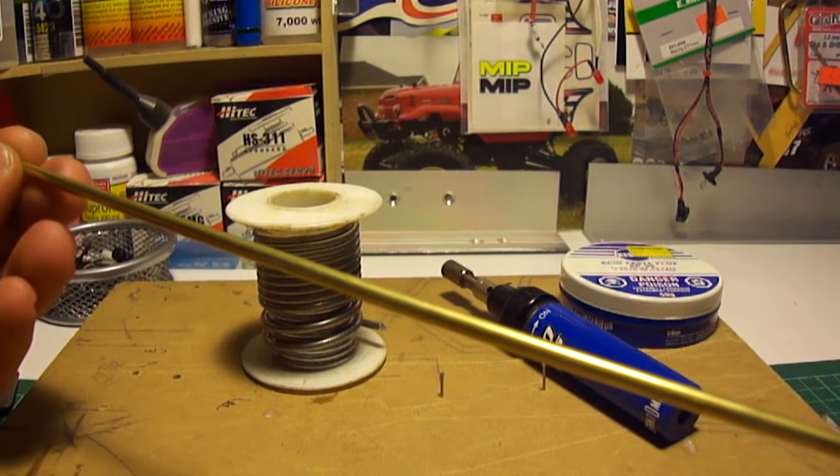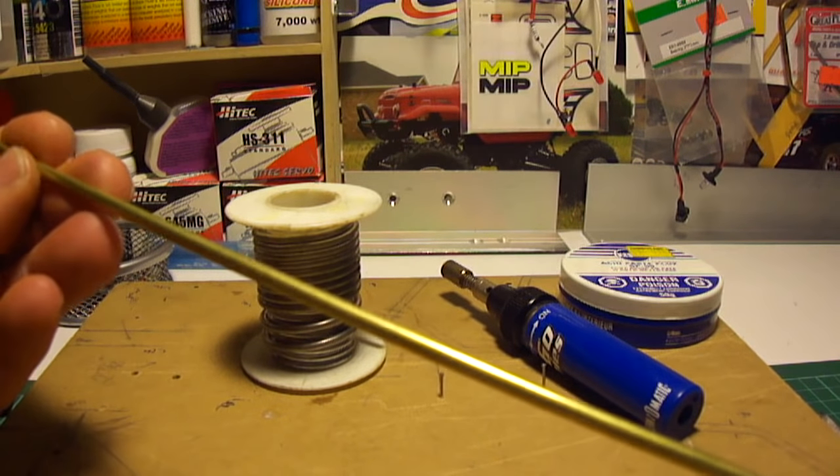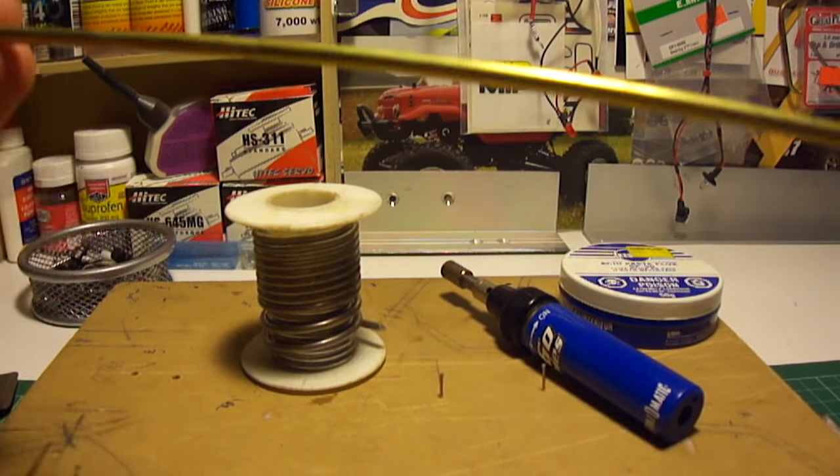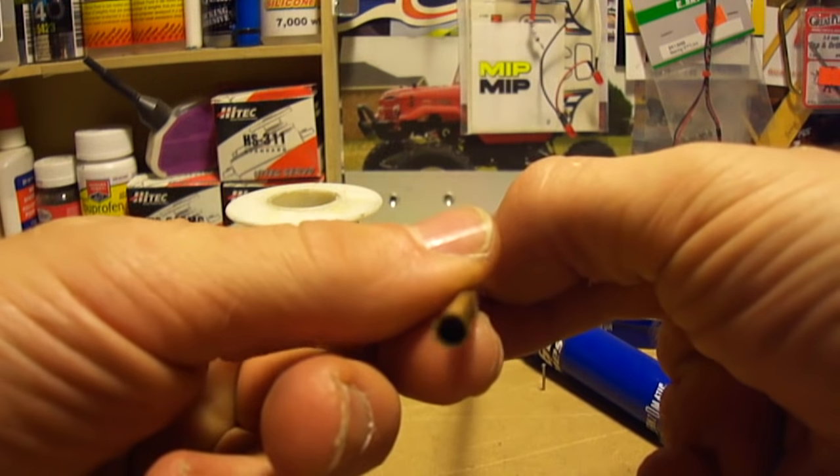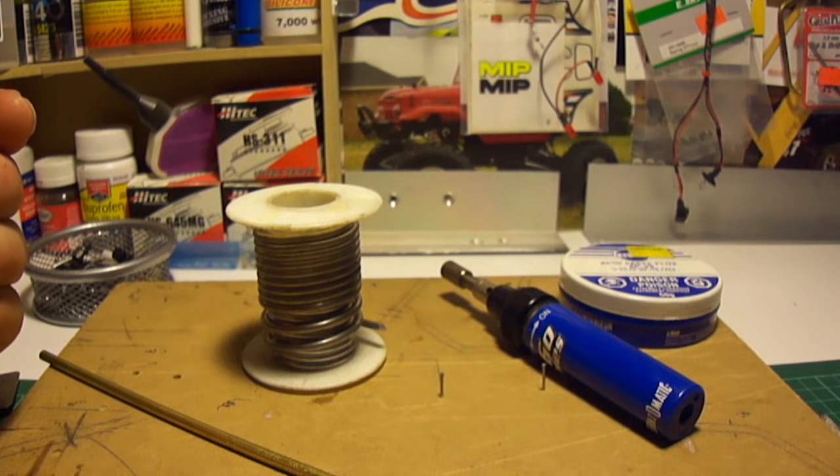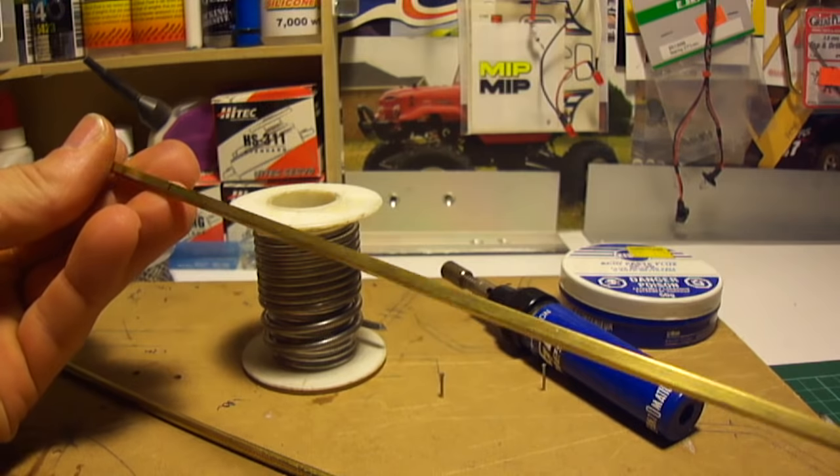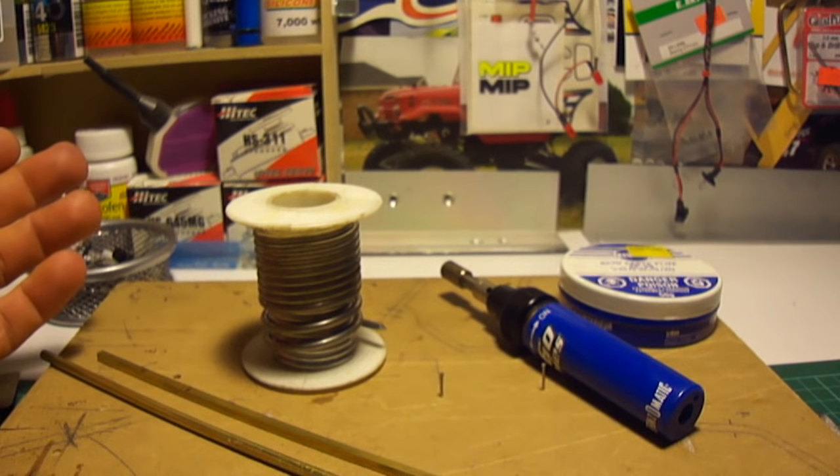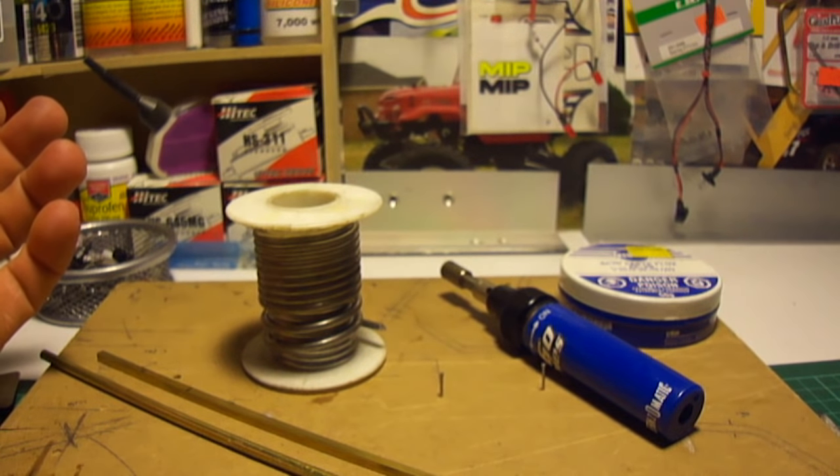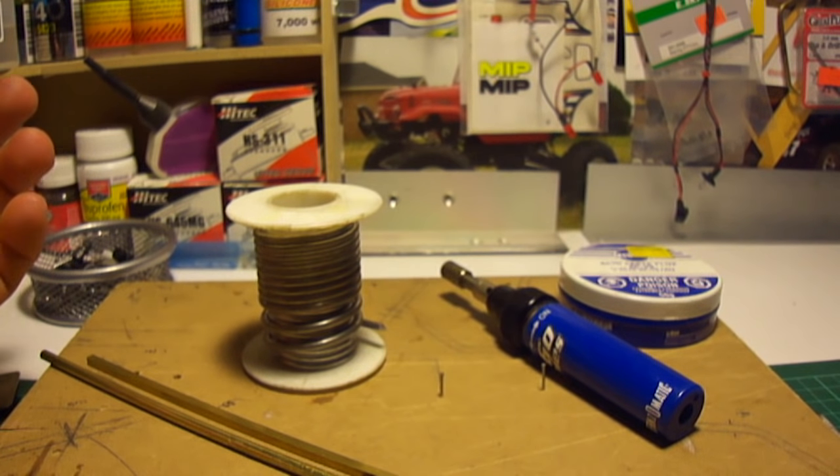Alright, so here we go. Obviously you guys are going to need some brass. This is 5/32 brass tubing. You can also get 1/8 by 1/8 square tubing. Actually you guys can get whatever you want. The stuff I'm using is K&S engineering brass. You usually find it at any of your local hobby stores.